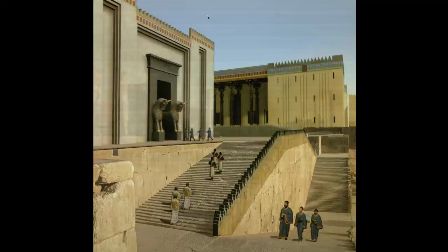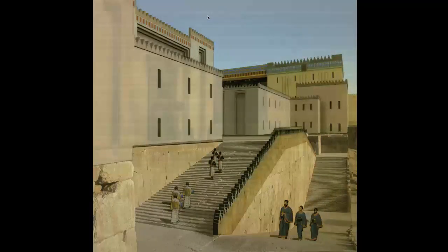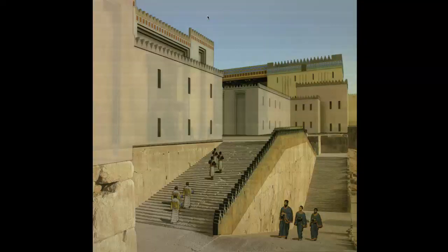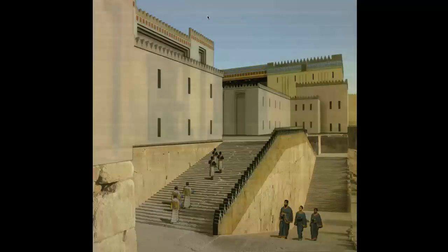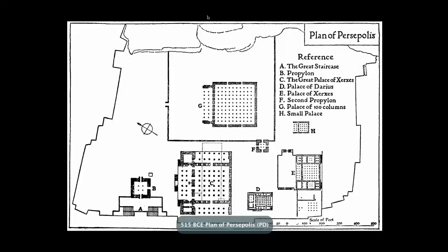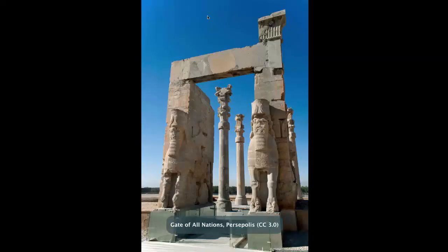In this visualization, we remove the walls to see what it looks like leading up to the Gate of All Nations and then onward into the primary throne room. Checking the plan view, we come up the stairs, pass through the Gate of All Nations, and into this grand throne hall, which is in part inspired by the Persian experience with other cultures.